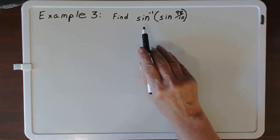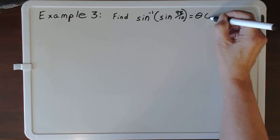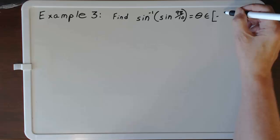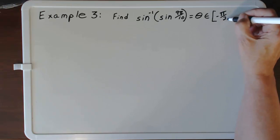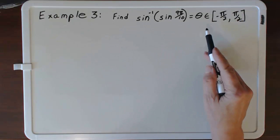First, we say that the inverse sine function is an angle. This theta lives inside the closed interval from negative π over 2 to π over 2. As a property of inverse functions,